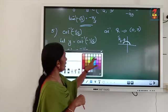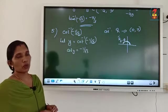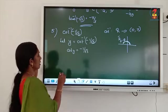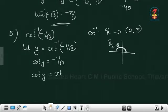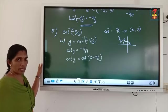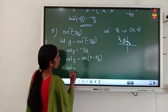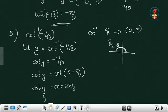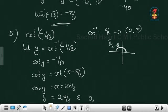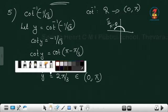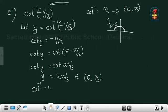Pi minus which angle for 1 by root 3? Tan 30 is 1 by root 3, so cot 60 means pi by 3. So cot y equals cot of pi minus pi by 3, which is in the second quadrant where cot is negative. We have the range up to 0 to pi. So cot y equals cot of 2 pi by 3, meaning y equals 2 pi by 3. Since 2 pi by 3 means 120 degrees, it is in the range 0 to pi. So cot inverse of minus 1 by root 3 equals 2 pi by 3.